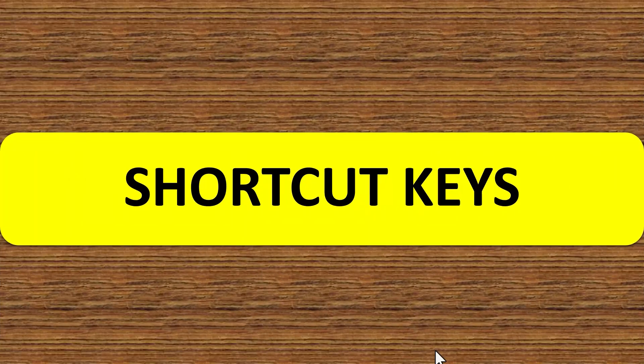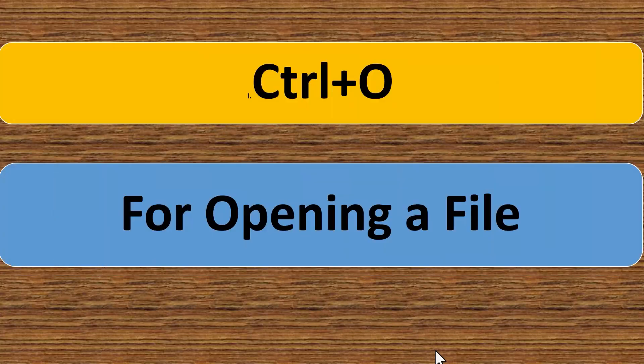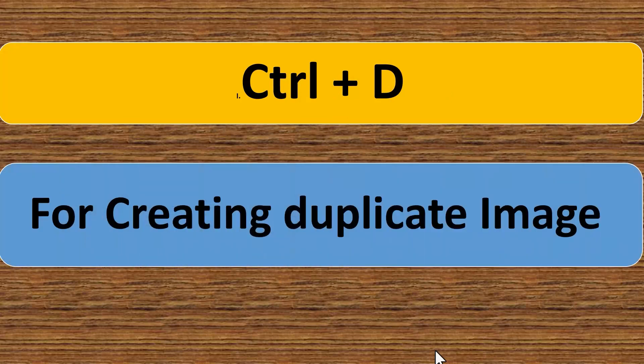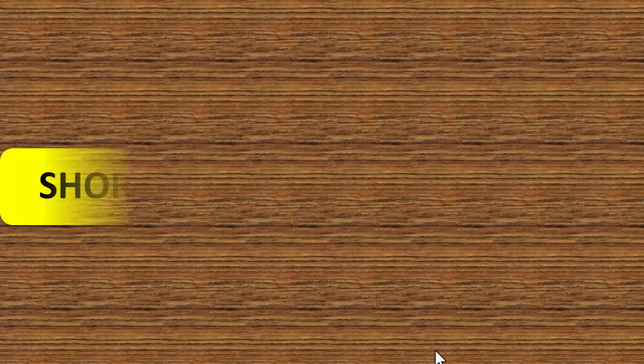Shortcut keys. Ctrl N for creating a new file. Ctrl plus O for opening a file. Ctrl plus D for creating duplicate image. Alt plus Enter for view image property. Shift plus C for cropping the image. Ctrl plus M for merging layers.